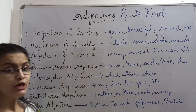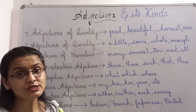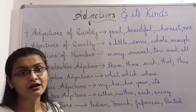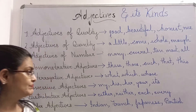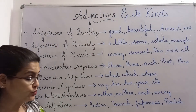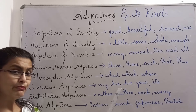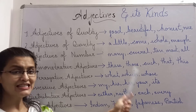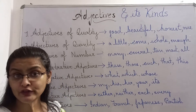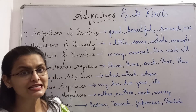Possessive adjectives are those adjectives which are used for showing possession of the nouns with which they are used. For example: my, his, her, your, its. My book, his pen, her table, your pen, its leaves. All these words are showing possession of the nouns with which they are used.